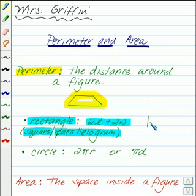It would look something like this. Here's our rectangle, and this is our length, and this is our width. You multiply our length times 2 and add it to the width times 2.